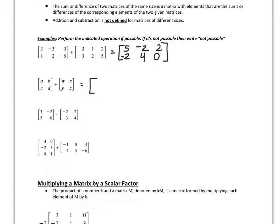The second one is a matrix with variables. I can add them just as I would with numbers. So the first term is a and w — if I add a and w together, I simply get a plus w. Then if I add b and x, I get b plus x. Then c and y gives c plus y. And the last term, d plus z, which is just d plus z. So this is my matrix.